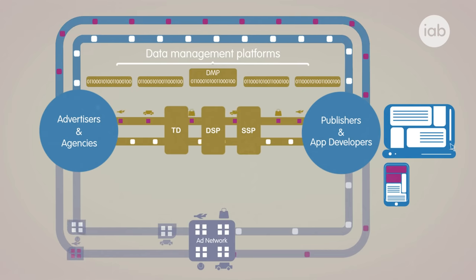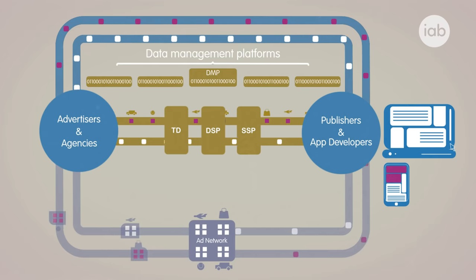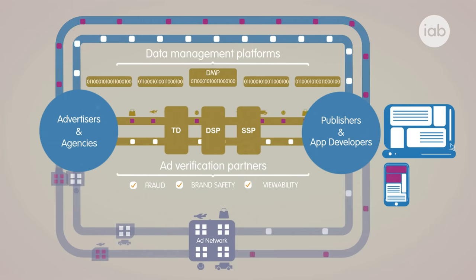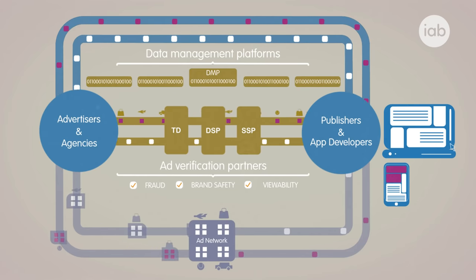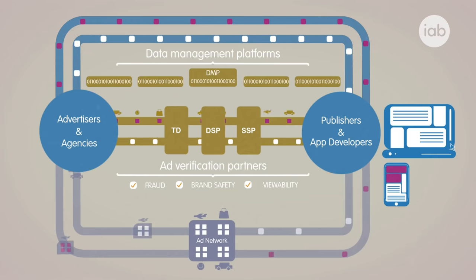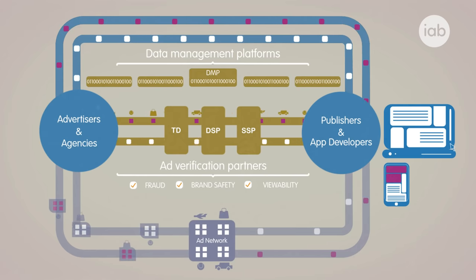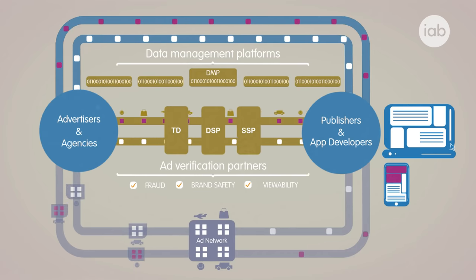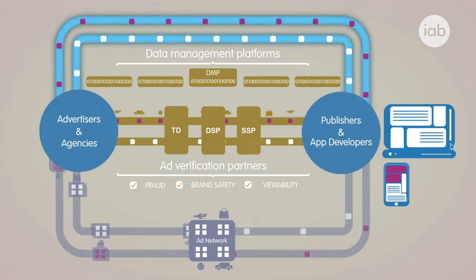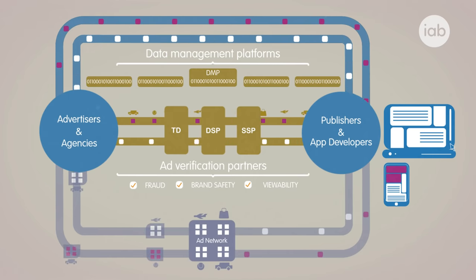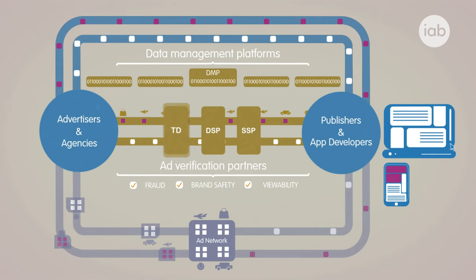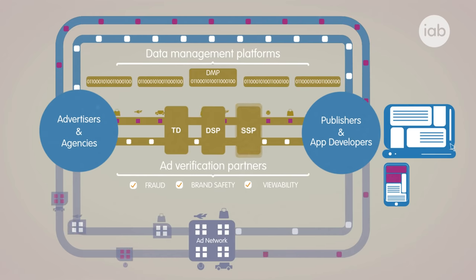In recent years, we have seen the increasing importance of ad verification partners. These companies are entrusted with validating the quality of the inventory being transacted and ensuring that it originated from legitimate sources. We now find ourselves in an ecosystem where the majority of ad impressions are transacted through some degree of automation, including even the oldest model of the direct relationship between buyer and seller. None of this would have been possible without the increasing wealth of data now available to marketers and the specialisation of every intermediary partner in the supply chain.